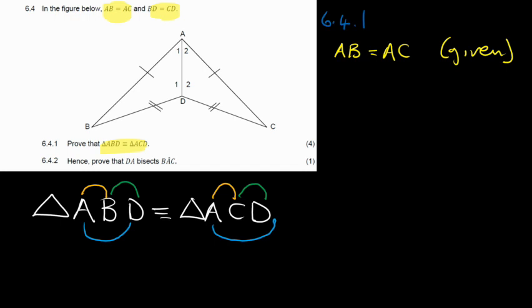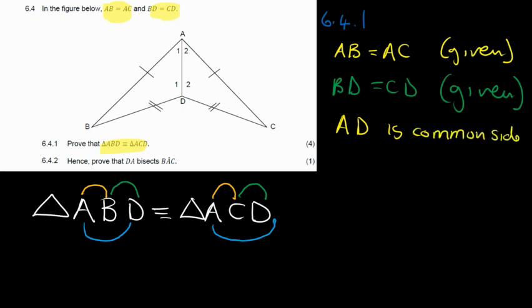Also, the green part, we know that BD is equal to CD. We were given that. And also, we know that AD is a common side. So you say AD is equal to AD and then you'll say common side in brackets.